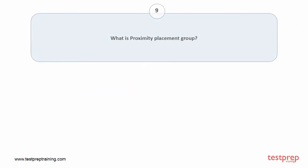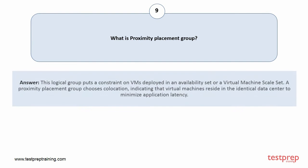Question number nine: What is a proximity placement group? This logical group puts a constraint on VMs deployed in an availability set or a virtual machine scale set. A proximity placement group chooses collocation, indicating that virtual machines reside in the identical data center to minimize application latency.